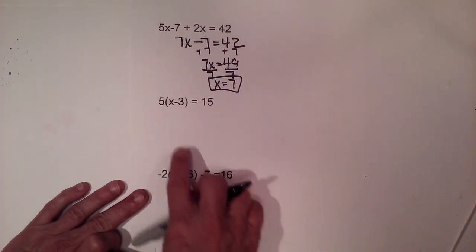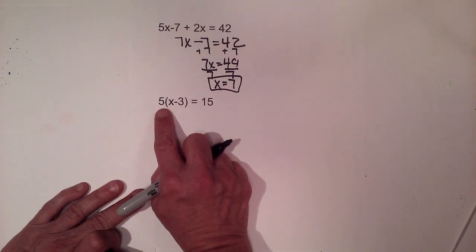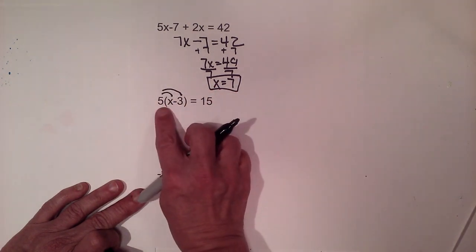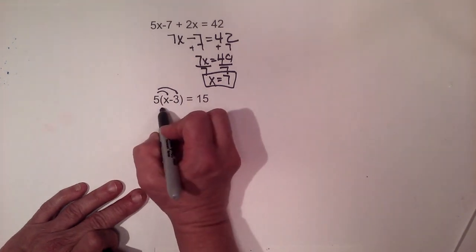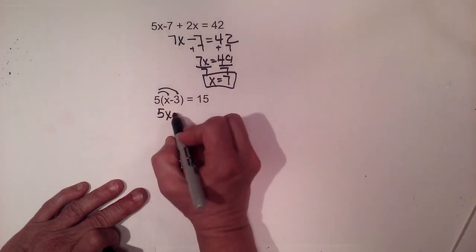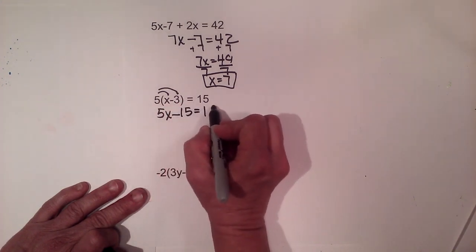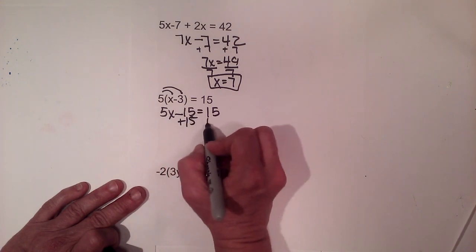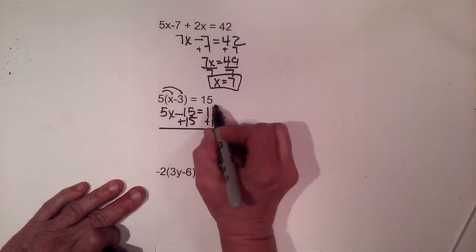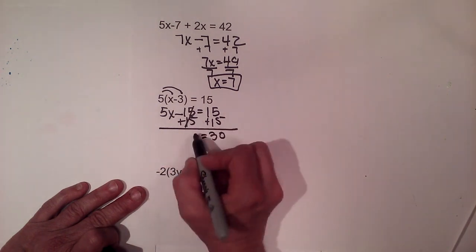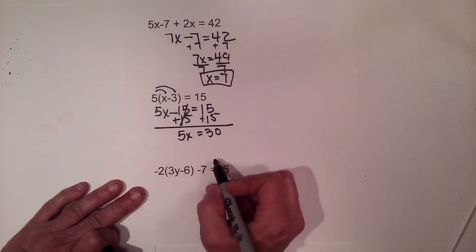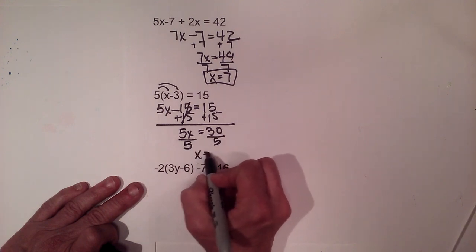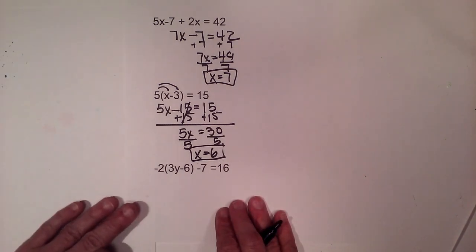The next problem uses the distributive property. When you have five times a quantity, you must multiply everything in the parentheses by five. Five times x is five x, and five times negative three is negative fifteen, equal to positive fifteen. Now we have a two-step equation — add fifteen to both sides, leaving thirty on the right. The fifteens cancel, and five times what gives us thirty? We divide by five, so x is six.